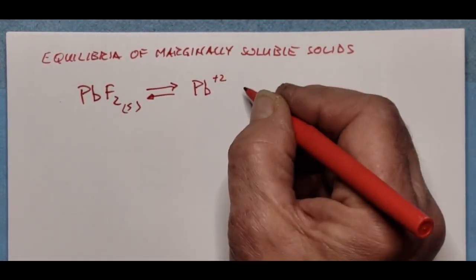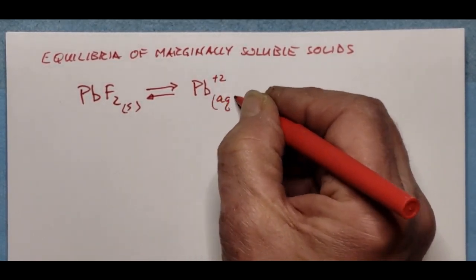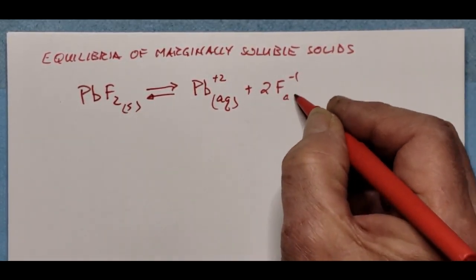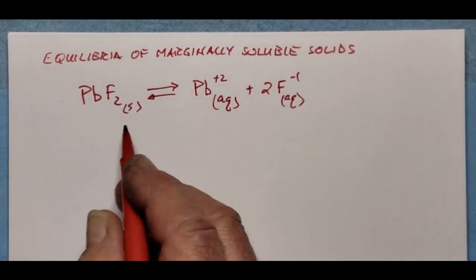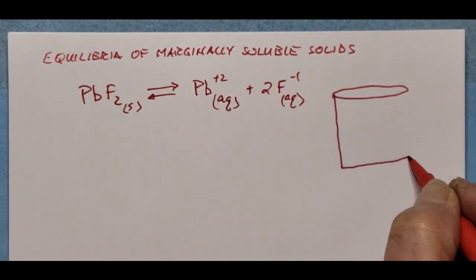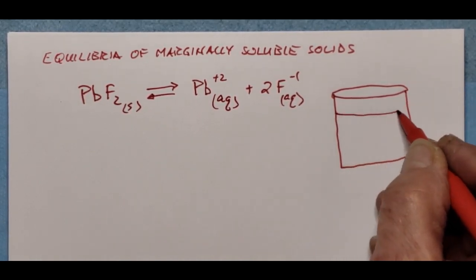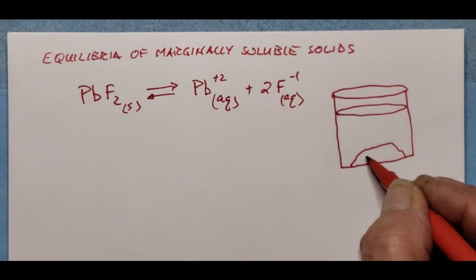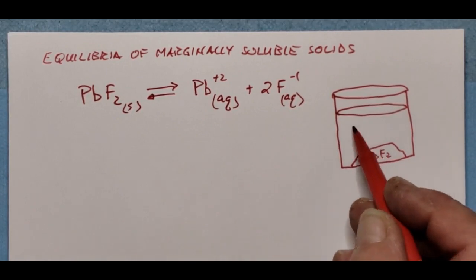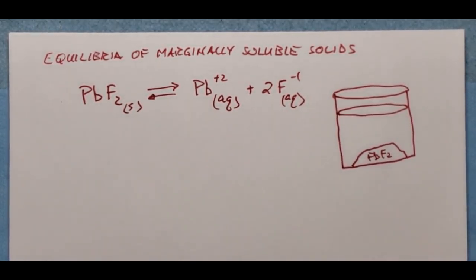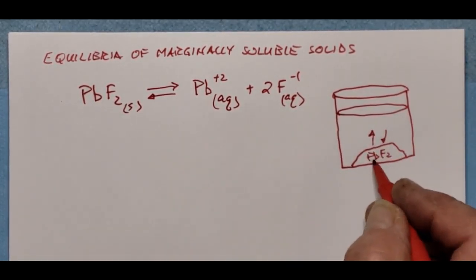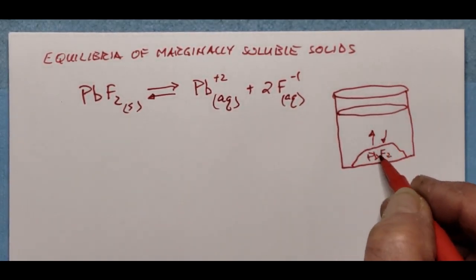When lead fluoride dissolves, it produces a lead ion (aqueous) and two fluoride ions, based on the formula for lead(II) fluoride. For the longest time we considered this completely insoluble, and thought the water wouldn't contain any lead or fluoride ions. But as our detection limits improved, we found that yes, there is an equilibrium established where a few lead ions and fluoride ions sneak out onto the dance floor.